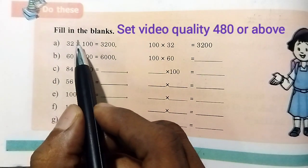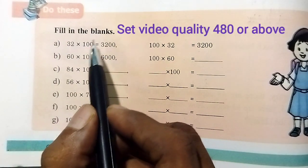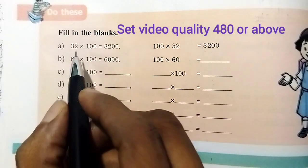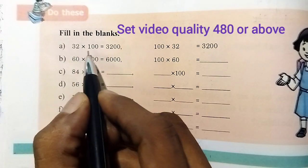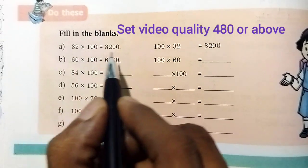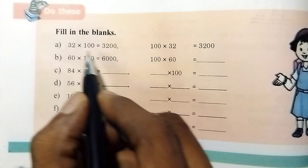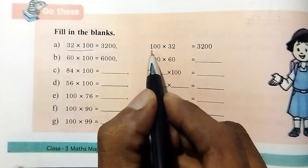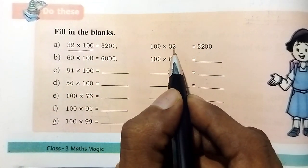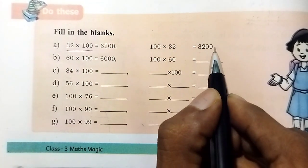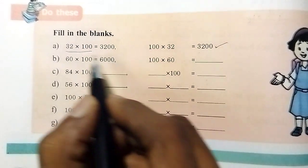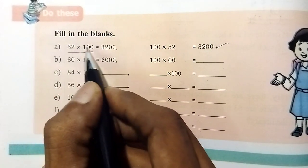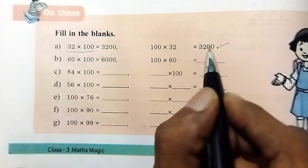Here we have a multiplication. Here we have 32 to 100. Here we have a multiplication of e2, and we have 32 to 100.